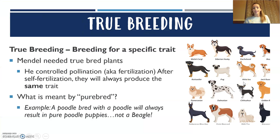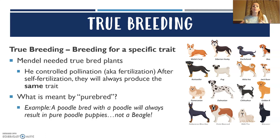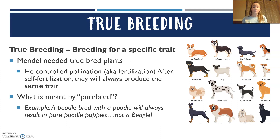Another term you will hear referenced in this unit is true breeding. True breeding is when you are essentially breeding for a specific trait, or you get a purebred. He would control the fertilization to make sure that the same trait was always produced. So purebred means when a particular flower color, for example, is crossed with another flower of that color, it will always produce the same thing.